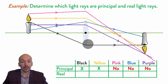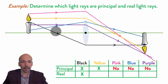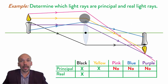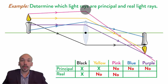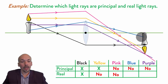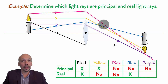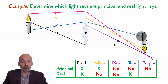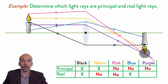Now for which are real light rays: the black one is a principal ray and goes through the lens, so it is a real light ray. The yellow one is not real because it doesn't go through the lens — it would go straight, so it's not a real light ray. The pink one bends without the lens, so it's not real. The blue one starts at the bottom of the candle, goes through the lens, and ends at the same point at the bottom of the image — so it is a real light ray, even though it's not a principal ray. The purple one doesn't start and end at the same point, so it's not a real light ray.